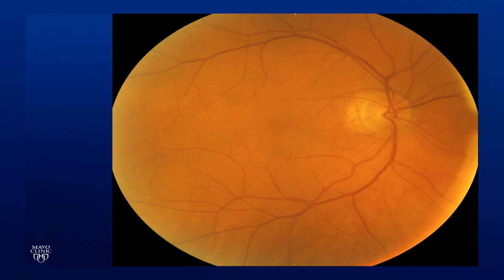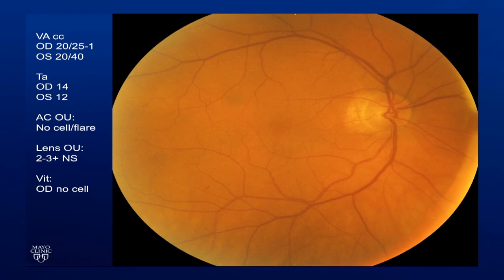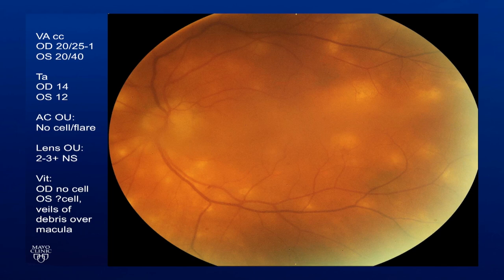This is a color fundus photo of the right eye. His visual acuity with glasses was 20/25 in the right eye and 20/40 in the left. Pressures were normal. In the anterior chamber there was no cell or flare. There was a little bit of cataract in each eye. In the vitreous of the right eye there was no cell. In the left there was a question of vitreous cell as well as veils of debris over the macula. This is how the retina looked in the posterior pole of the left eye — the view is somewhat hazy due to those veils of debris, and there are multiple yellow-white spots that appear deep to the retinal vessels scattered throughout the macula and along the arcades.